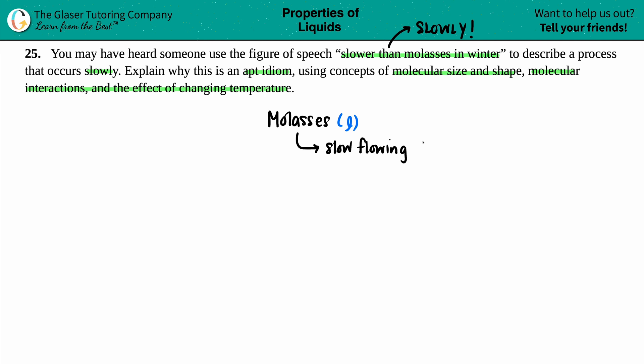And if something is slow flowing, that means that it is super resistant to flow. It does not want to flow. It's not like water, where if you pick water up with a spoon and you drop it into something, the water is just going to fall right in. Molasses, just like honey, it takes so long for it to flow. And if something is super resistant to flow, that's a high viscosity.